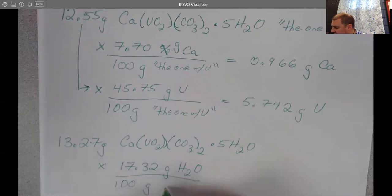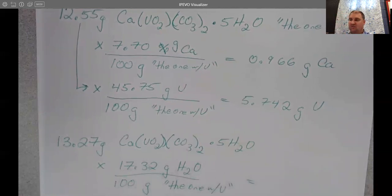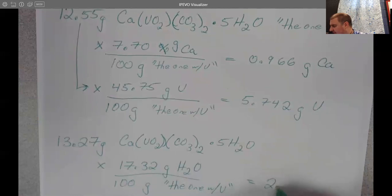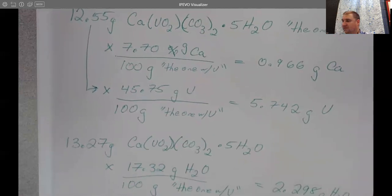And then we want to have similar units here, the one with uranium. So again, 13.27 on the calculator times 17.32 divided by 100. I get 2.298 grams of water for the sample.